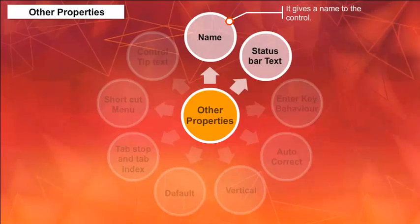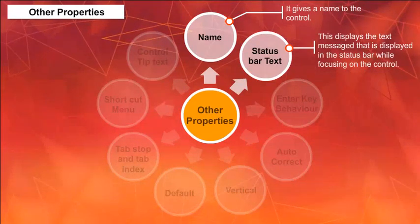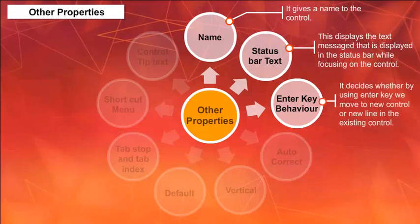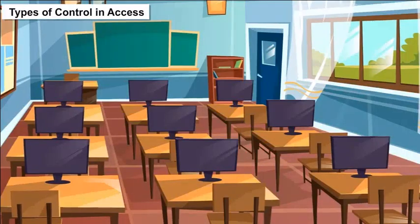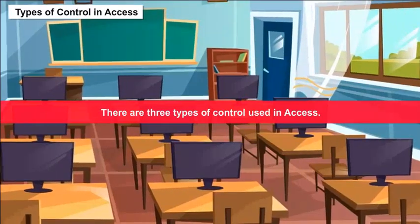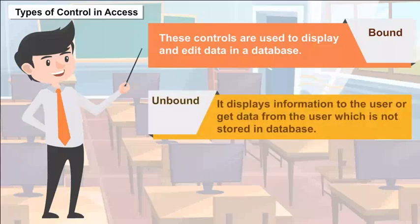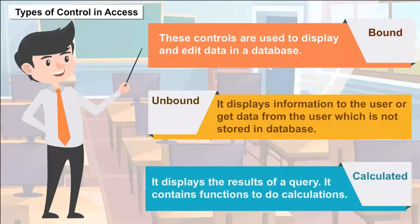Other Properties: Name — gives a name to the control. Status Bar Text — displays the text message in the status bar while focusing on the control. Enter Key Behavior — decides whether using it or not. Types of Controls in Access: There are three types — Bound (used to display and edit data in a database), Unbound (displays information to the user not stored in database), and Calculated (displays results of a query and contains functions to do calculations).